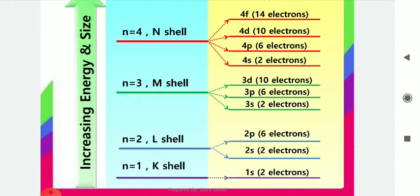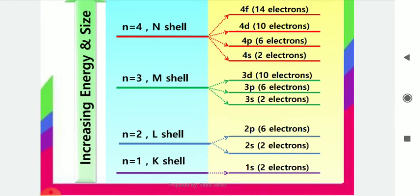If the principal quantum number has value n equals 1, we have named it as the K shell. It has the capacity of two electrons, which will accommodate in the 1s orbital. Moving to n equals 2, which has two sub-shells, the total capacity is 8 electrons, calculated using the 2n² formula. It has two orbitals — 2s and 2p — where s accommodates 2 electrons and p accommodates 6 electrons.